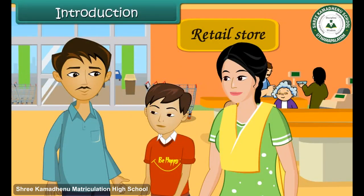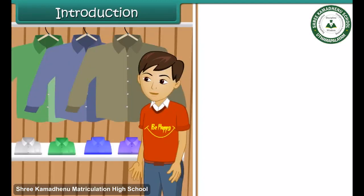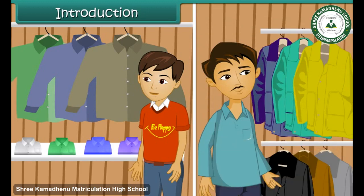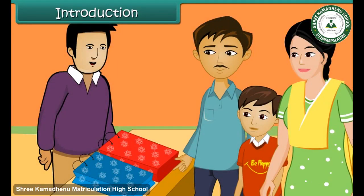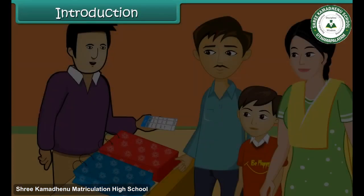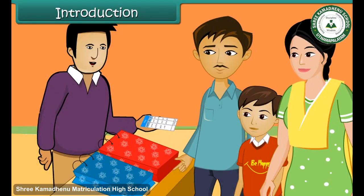Tejas is out shopping with his parents at a retail store. He chooses a pair of jeans, a jacket and a sweatshirt, while his father selects a coat for himself. When they present these items at the cash counter, the cashier hands them over a bill.